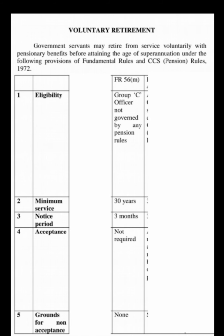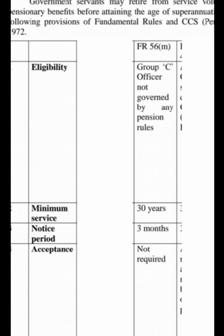Voluntary Retirement Guidelines according to F.R. 56M. Eligibility: Group C officers not governed by any pension rules. Minimum service: 30 years. Notice period: 3 months. Acceptance: Not required. Grounds for non-acceptance: None. This is an important point — there are no grounds for non-acceptance under F.R. 56M.